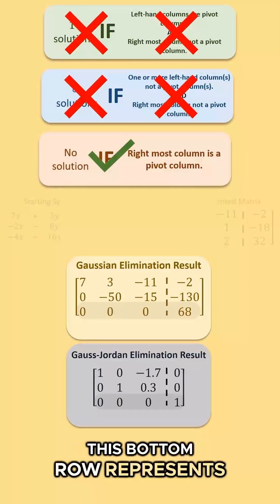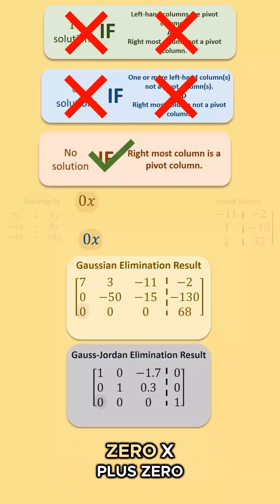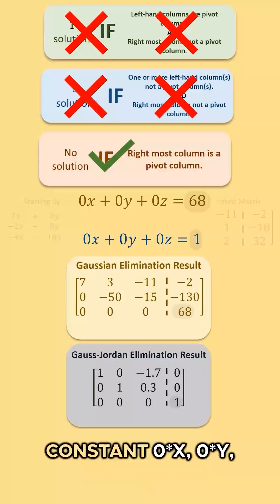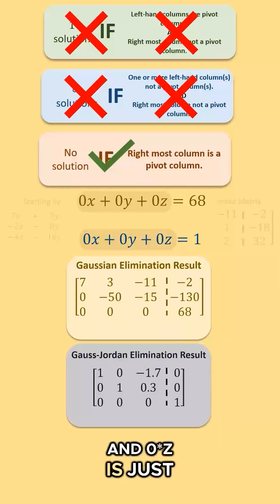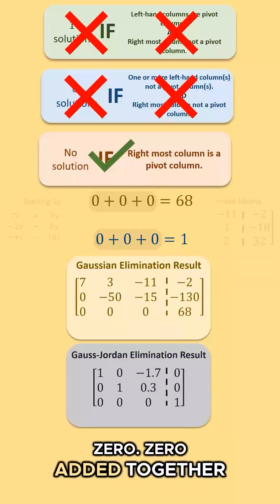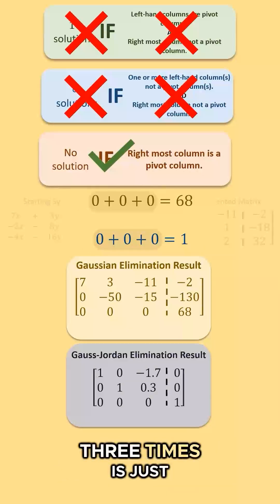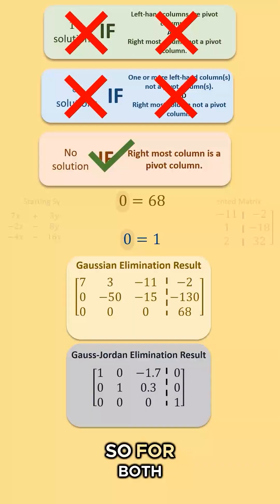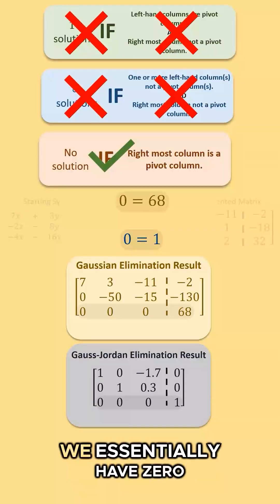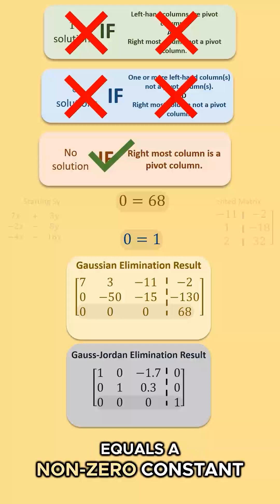This bottom row represents 0x plus 0y plus 0z equals a non-zero constant. 0x, 0y, and 0z is just 0. 0 added together three times is just 0. So for both of these final results, we essentially have 0 equals a non-zero constant.